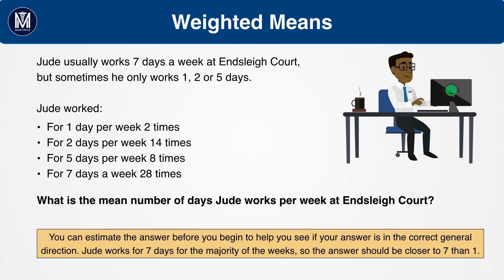Remember back to tutorial 2 on estimation: you can do a rough estimate to make sure you have the right general range for the answer. First, make sure the number is between 0 and 7 — there are 7 days in a week. Many people mistakenly use 2, 14, 8, and 28 as the values and the days as the weights, and get a number much higher than 7. Don't forget common sense: you can only have a maximum of 7 days per week. Also, Jude works for 7 days for the majority of the year, so the answer needs to be closer to 7 than to 1. Therefore, 5.12 does seem a good fit.